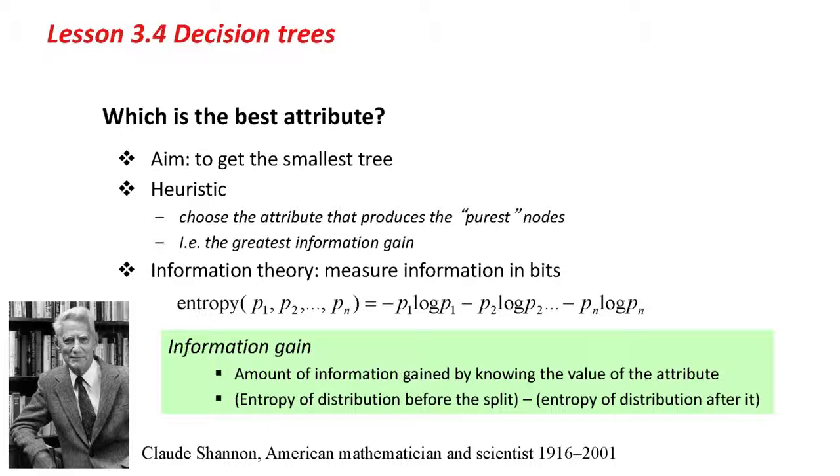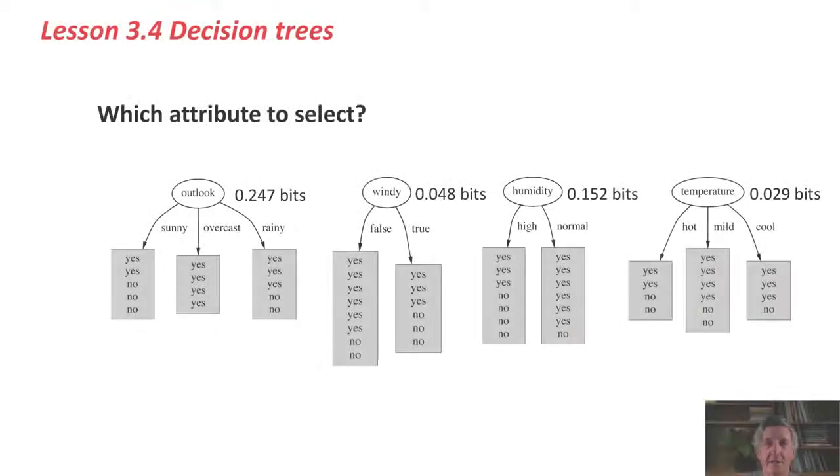What we do is we look at the information gain. How much information in bits do you gain by knowing the value of an attribute? That is, the entropy of the distribution before the split minus the entropy of the distribution after the split. Here's how it works out for the weather data.